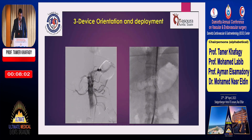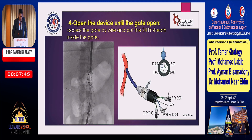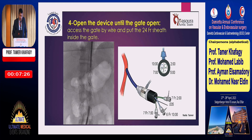For device orientation and deployment, we orient the device using the marks on the branches and also identify anterior and posterior orientation using the wire on the anterior surface of the graft. After device orientation, we open the device until the gate opens, then pass a wire through the gate and place a 24 French sheath inside the gate. This large sheath accommodates three long sheaths in each quadrant and also a wire in the fourth quadrant.